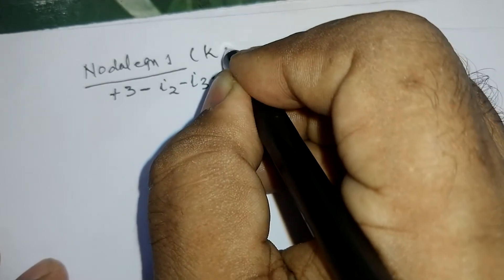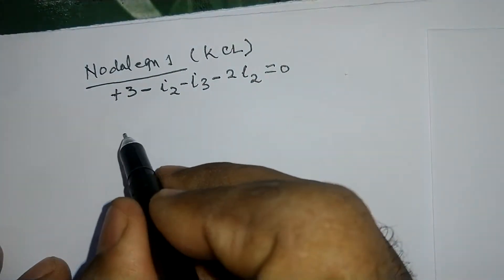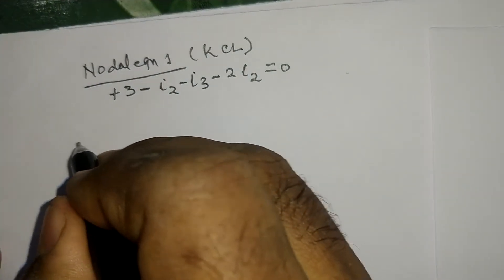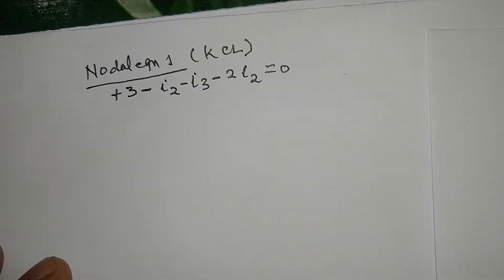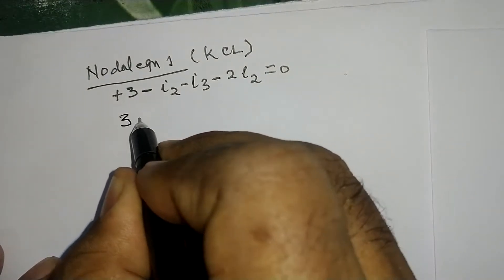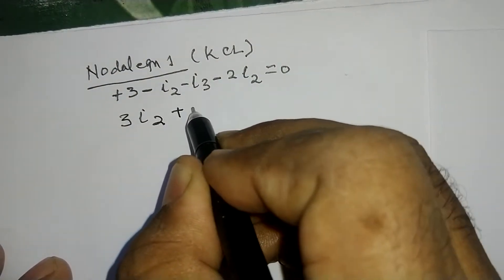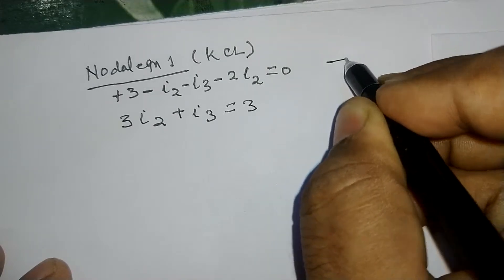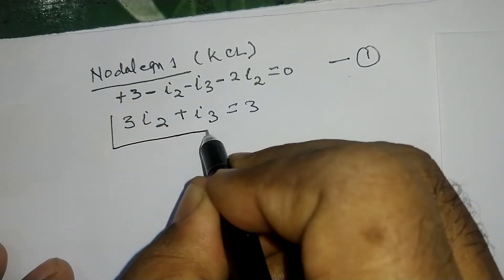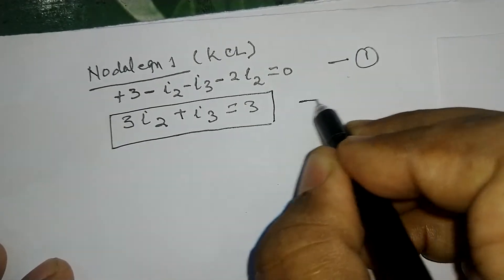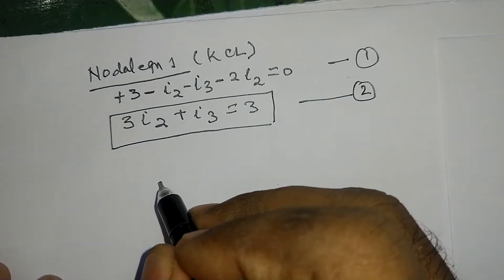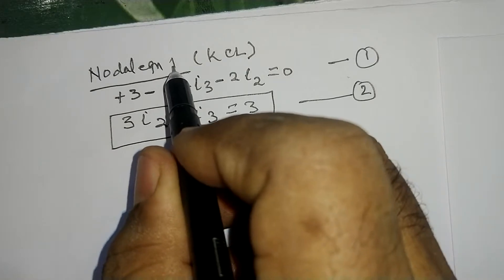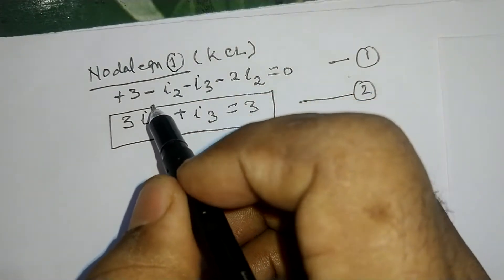By solving, this gives 3I2 plus I3 is equal to 3. The nodal equations written at points 1 and 2 must be in terms of node voltages V1 and V2. Looking at the circuit, I2 is flowing from node 1 to node 2. At node 1 the voltage is V1, at node 2 the voltage is V2.